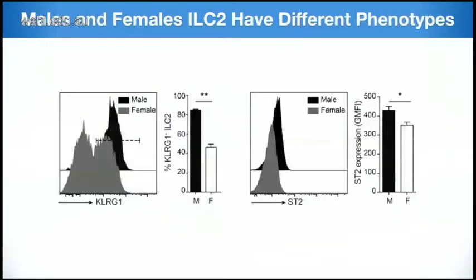It's interesting also to look at KLRG1 expression, which is a maturation marker for ILC2 — it is very different between males and females. The frequency of KLRG1-positive ILC2 in females is dramatically higher. This was also true for ST2 (the IL-33 receptor), IL-25 receptor, and IL-2 receptor. So we see these differences not only in numbers and frequency but also in phenotype between male and female.